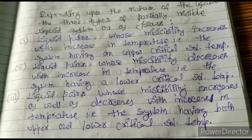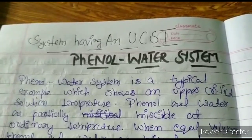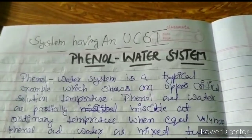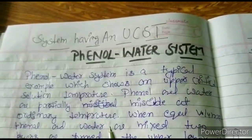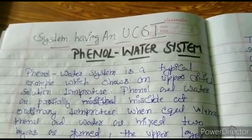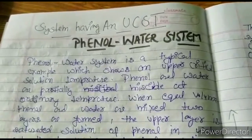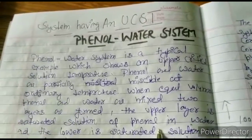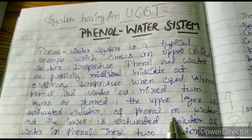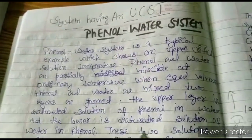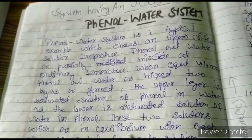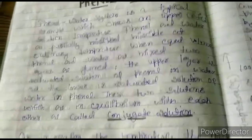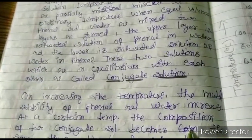The phenol-water system is the typical example which shows an upper critical solution temperature. Phenol and water are partially miscible at ordinary temperature. When equal volumes of phenol and water are mixed, two layers are formed. The upper layer is a saturated solution of phenol in water, and the lower layer is a saturated solution of water in phenol. These two solutions, which are in equilibrium with each other, are called conjugate solutions.